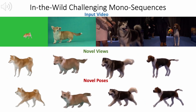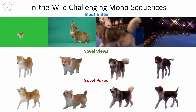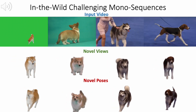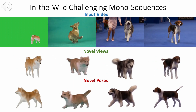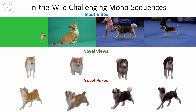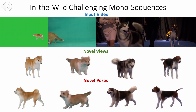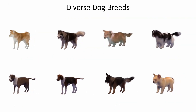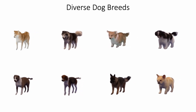GART is a general representation that can also work for animals. We show very challenging in-the-wild monocular dog video clips in the first row. Our captured dog models are shown in the middle and are reanimated with novel poses at the bottom. Note how GART can capture diverse dog breeds.